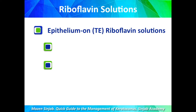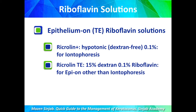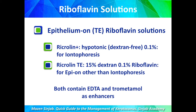For epithelium-on or trans-epithelial techniques, riboflavin solutions are of two types: Ricroline Plus, which is hypotonic or dextran-free and used for iontophoresis, and Ricroline TE (trans-epithelial), which is isotonic with 15% dextran and used for other epithelium-on techniques. Both types contain sodium EDTA and trometamol as permeability enhancers.